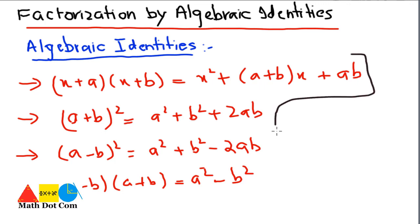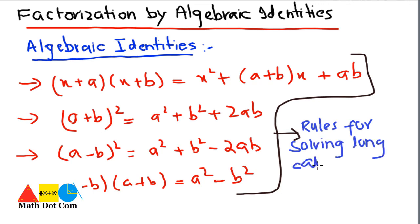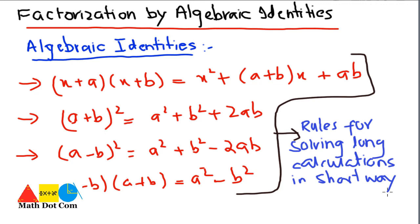These are the four identities that will help you in solving long calculations in short ways. When you are given a question with complex calculations or simplification, we can use these identities to make it shorter. Let's see how you can apply these identities on some examples, and how to know which identity to apply on which question.